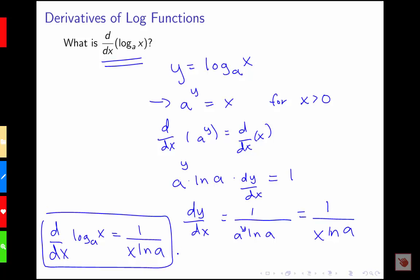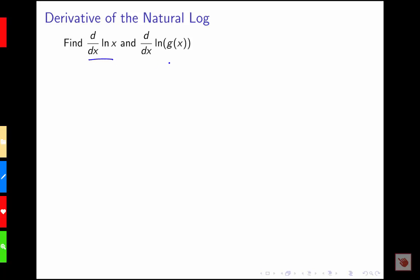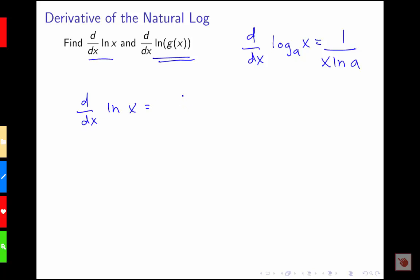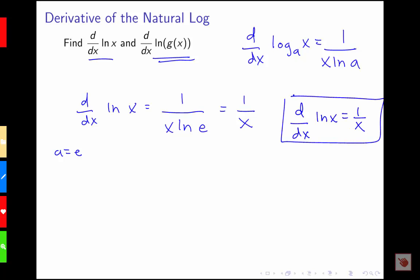Now we want to see how this rule can help us get the derivative rule for our natural log function. The derivative of the natural log of x: using our rule, we get 1 over x times natural log of a, where a equals e. So we have 1 over x times natural log e. Since the natural log of e is 1, this simplifies to give us the derivative of the natural log of x equals 1 over x.